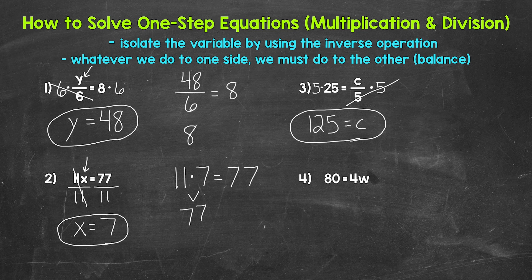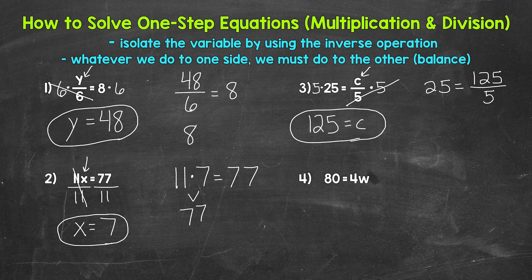Let's check it by plugging 125 in for c. So 25 equals 125 divided by 5. 125 divided by 5 is 25, so we are correct. C equals 125.